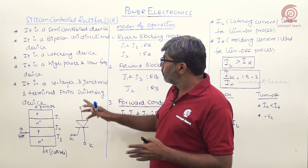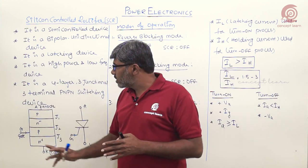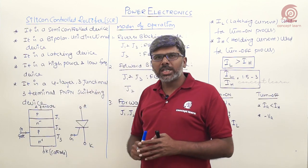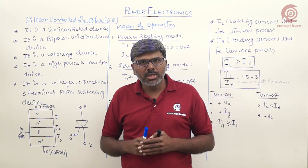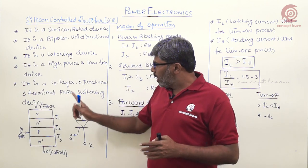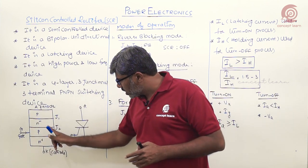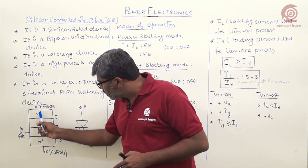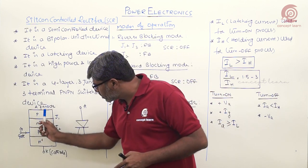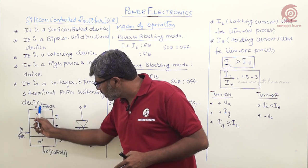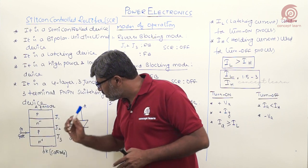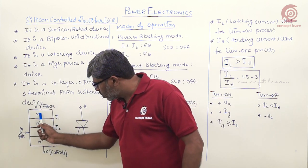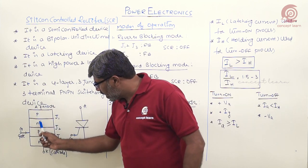Coming to the structural details, SCR is a four-layer, three-junction, three-terminal PNPN switching device. The four layers alternate as P, N-minus, P, N-plus.